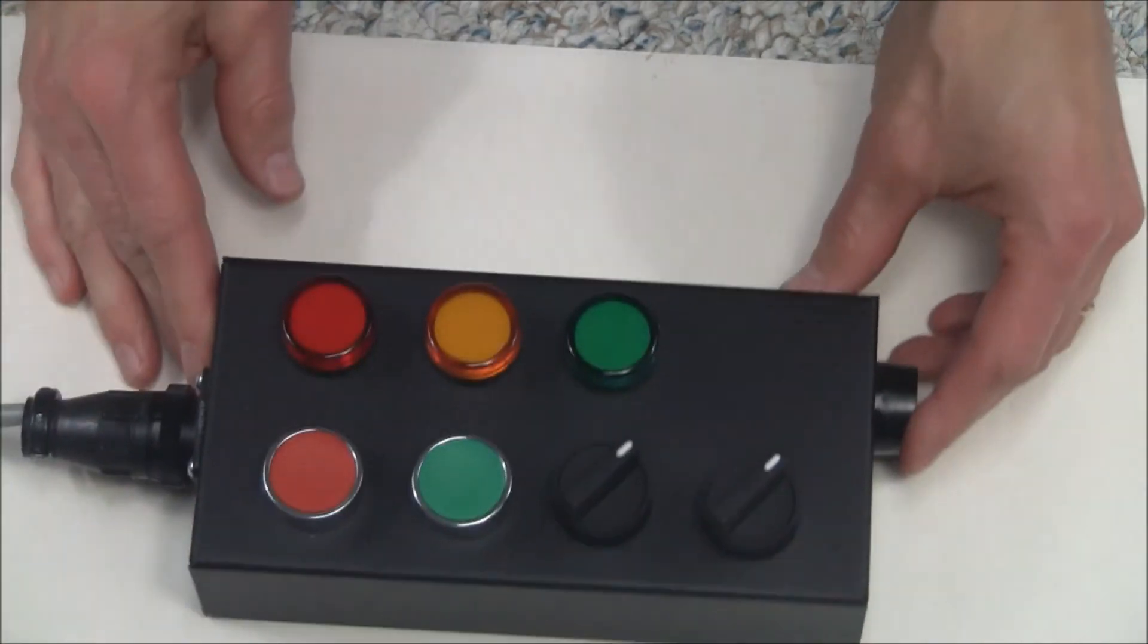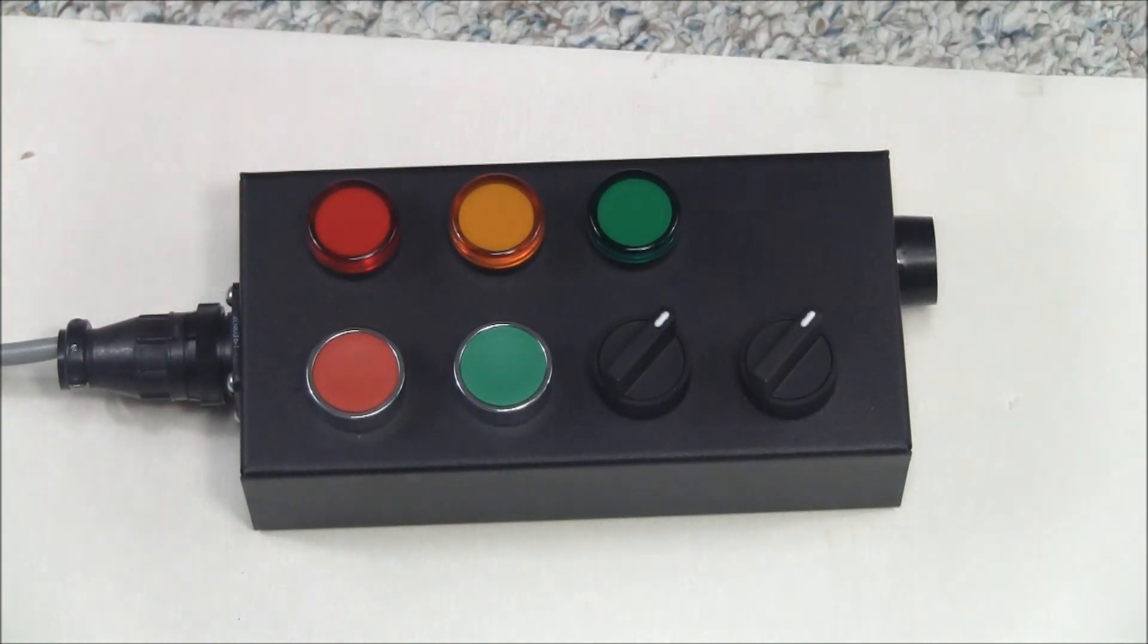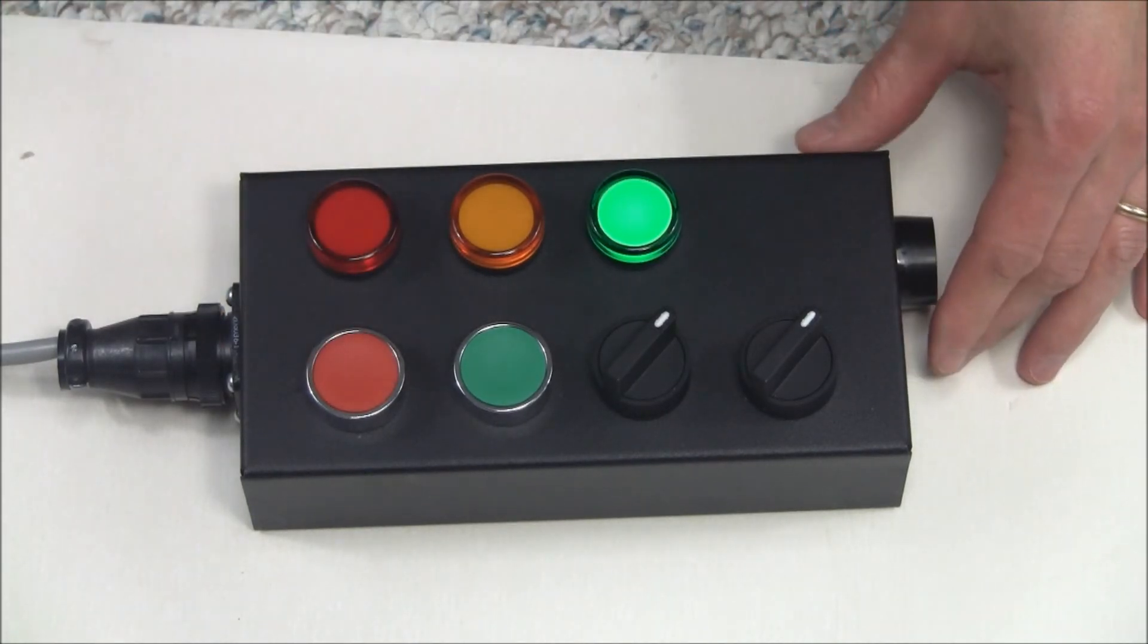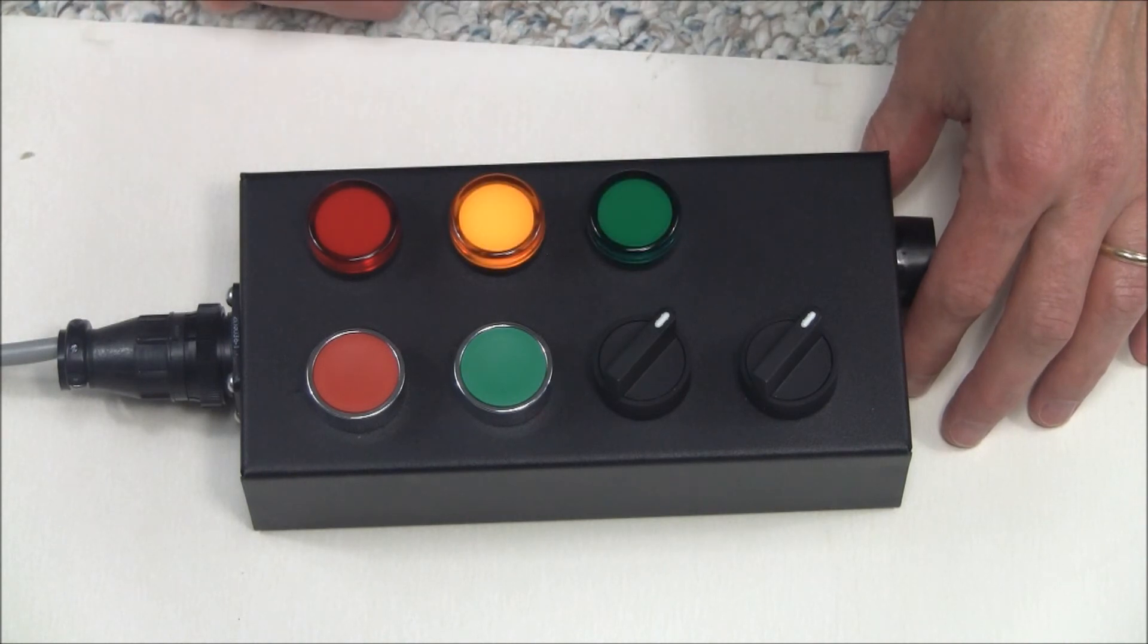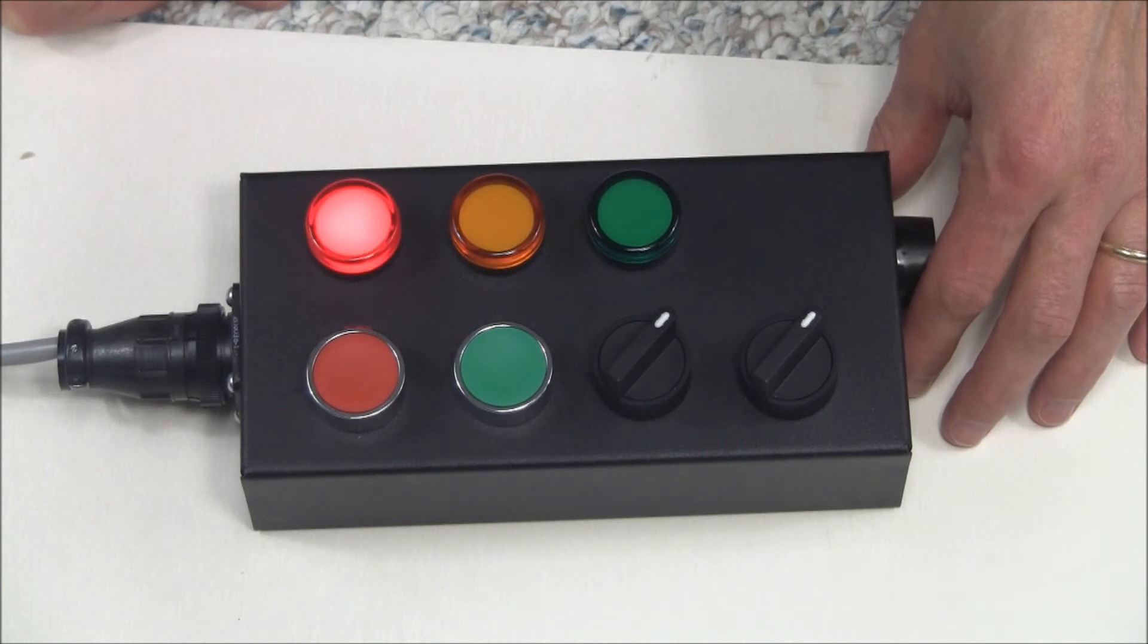My PLC is currently running a program like the stoplight, and so to start that sequence, I'm simply using the red button as my start, and using some basic sets, resets, and timers, have it go through each of the lights in sequence.